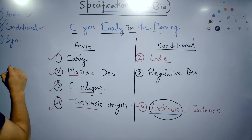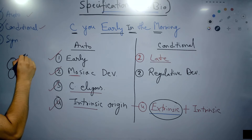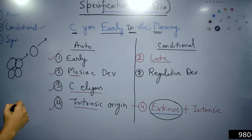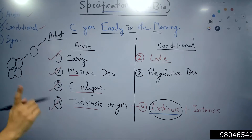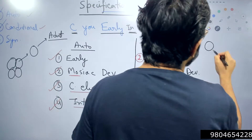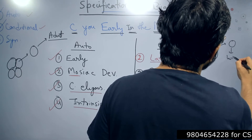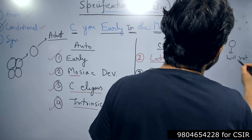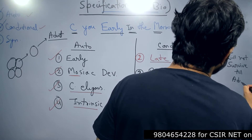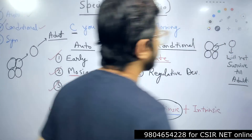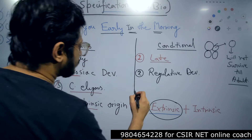In autonomous specification, let's say one blastomere gets separated — will it survive till adulthood? Yes, it can survive to become an adult organism because the blueprint is intrinsic. But in the case of conditional specification, if we take one blastomere from the mixture of blastomeres, it will not survive till adulthood — it's not possible. That is regulative development.